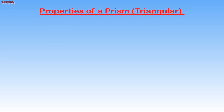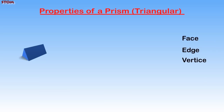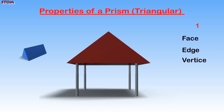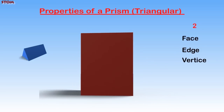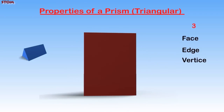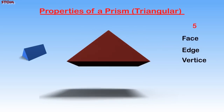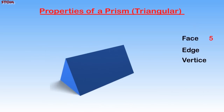Properties of a Triangular Prism. The number of faces a triangular prism has is not the same as that of a hexagonal prism. Let us count together: one, two, three, four, and five. Our triangular prism has 5 faces.